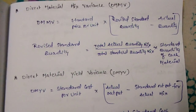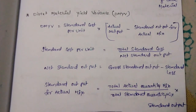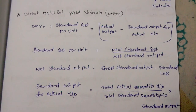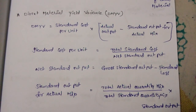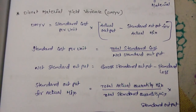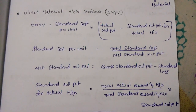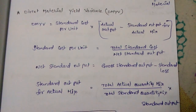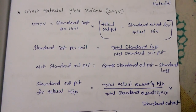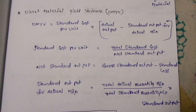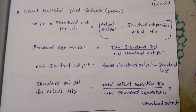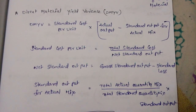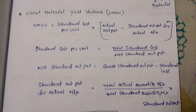Next is Direct Material Yield Variance, DMYV. DMYV equals standard cost per unit multiplied by the difference between actual output and standard output for actual mix. Standard cost per unit equals total standard cost divided by net standard output. Net standard output equals gross standard output minus standard loss. Standard output for actual mix equals total actual quantity mix divided by total standard quantity mix, multiplied by standard output.